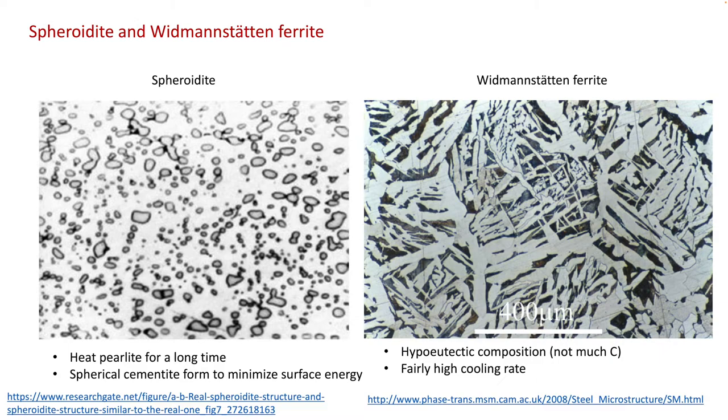In the steel literature, you may also have heard about the Widmanstätten ferrite. Then what is Widmanstätten ferrite? For that, you need a hyper-eutectic composition that's on the left-hand side of the eutectic point. Those pro-eutectic ferrite at a fairly high cooling rate, they will grow across the entire prior austenite grain, giving you those Widmanstätten ferrite.